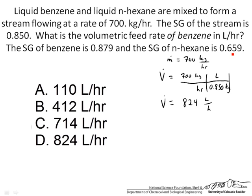So we expect that the stream is made up mostly of benzene. We could do a calculation, convert mass to volume, kilograms per hour to liters per hour, simply by using the overall density of the stream.